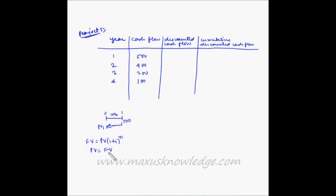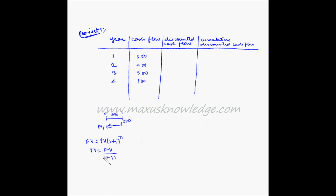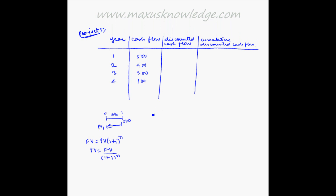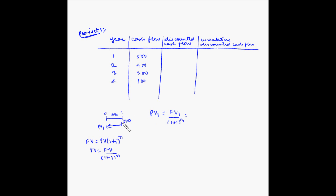So PV equals FV divided by (1 + i) to the power n. Let's calculate the discounted cash flow for each cash flow. PV1, the present value for the cash flow in the first year, equals FV1 divided by (1 + i) to the power n1. The future value is 500, divided by (1 + 0.1) to the power 1. This becomes 500 divided by 1.1, which equals 454.5 rupees.